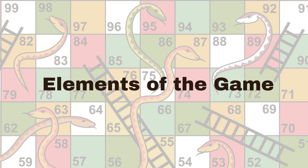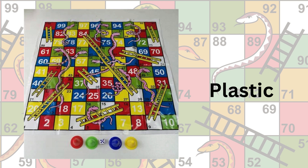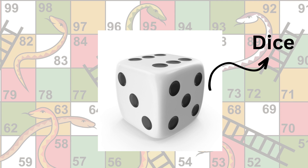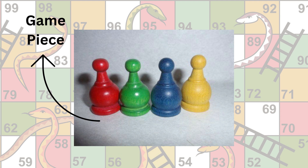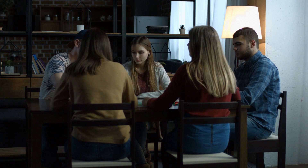Let us take a closer look at the elements of this game. Firstly, you have the game board, which can be made out of different materials such as cardboard or plastic, and has a graphic representation of all the squares. Next, you have the dice, which is used to determine the number of spaces a player can move in each turn. Moreover, you have pawns or game pieces, which are used to represent each player on the board. The game can become quite competitive as players try their best to beat their opponents to the end square.